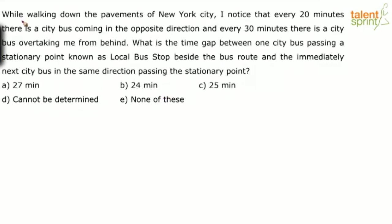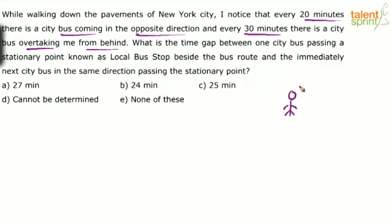This is about a person who is walking on a road. He finds that every 20 minutes there is a city bus which comes in the opposite direction, and every 30 minutes there is a city bus overtaking him from behind. So basically, if this is the man walking in one direction, there are buses coming from behind and buses coming in the opposite direction. He notices that every 20 minutes there is a bus coming in the opposite direction.